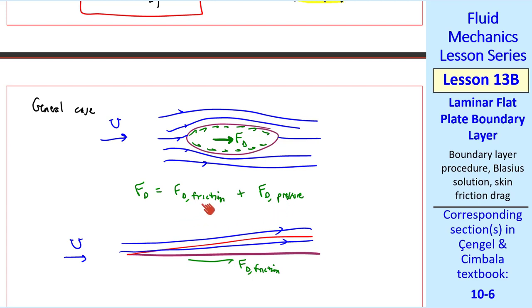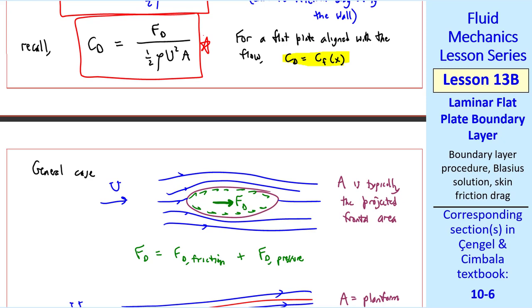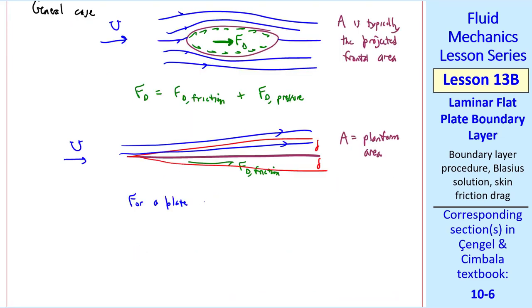The other difference is that A is typically the projected frontal area, when you're talking about flow over bodies like this. In our case, our flat plate has no thickness at all, so the frontal area is zero. That's why A is the planform area here. As long as we know which A we're using, this drag coefficient is valid. And as I said, in our case of the flat plate, the drag coefficient is the same as the skin friction coefficient, Cf. I'll mention finally, that for a plate exposed to flow on both sides, top and bottom, we multiply by two.